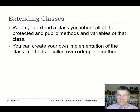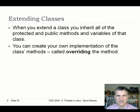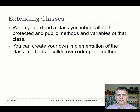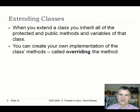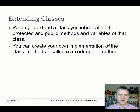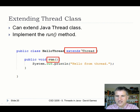The other way to run threads in Java is to extend the Thread class. When you extend a class you inherit all the protected and public methods and variables of that class. You can also create your own implementation of the class's methods — this is called overriding. If the parent class has some protected method, you can call it as-is, but you can also write your own version, and when that method is called on your class, your version is what gets called, not the original.